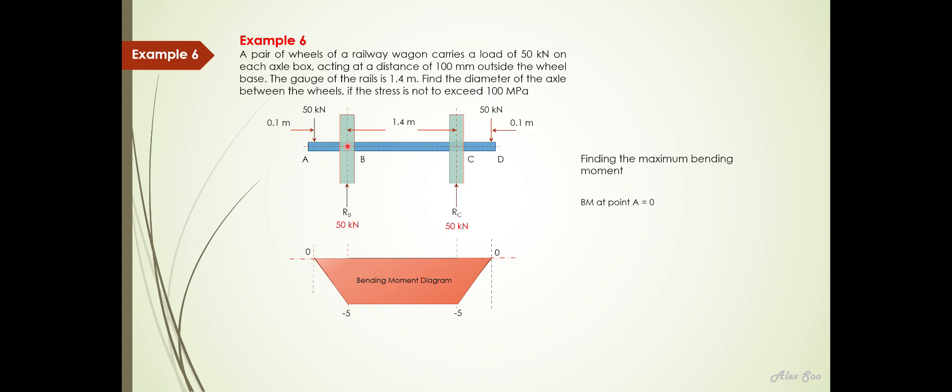Then after that, we have at point B. So at point B, you will have, actually sorry, it's a negative because it is causing the shaft to bend downwards. So I have negative 50 times this length here of 0.1 meter. So that is why you have a bending moment of negative 5 kilonewton meter. So that is about point B.